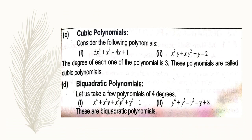Fourth one is biquadratic polynomials. Here, the degree is 4. The highest power, we can see here, x and y both have 4. So these are the biquadratic polynomials.